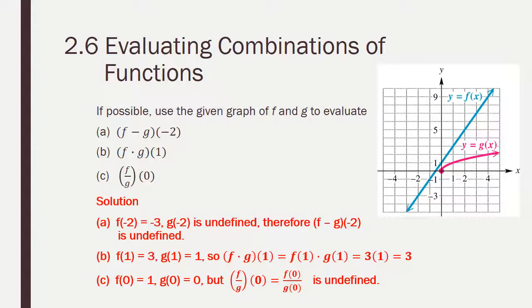For Part B, when you go to 1 on the x-axis and you go up to the blue line, you have a y value of 3. When you go 1 on the x-axis and go up to the red curve, g has a value of 1. So we have 3 times 1, which is 3.